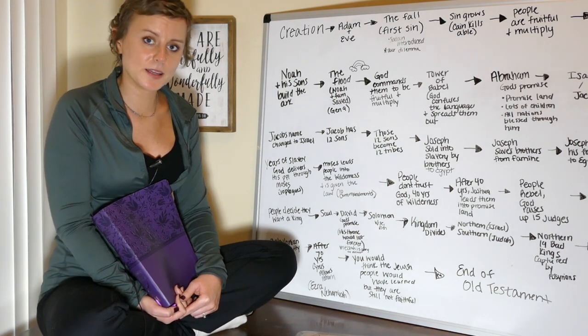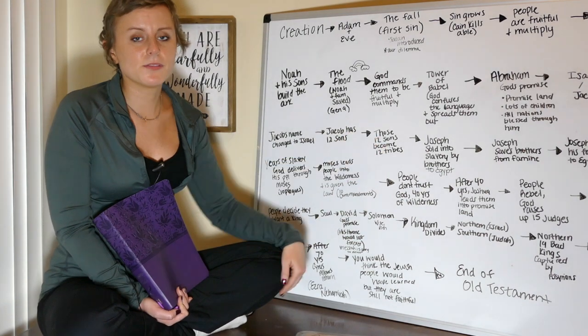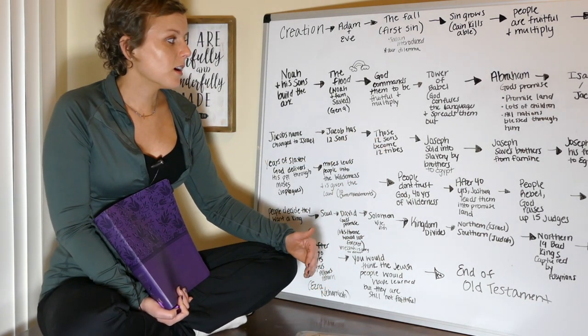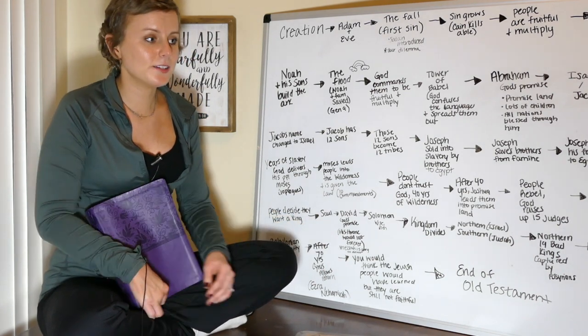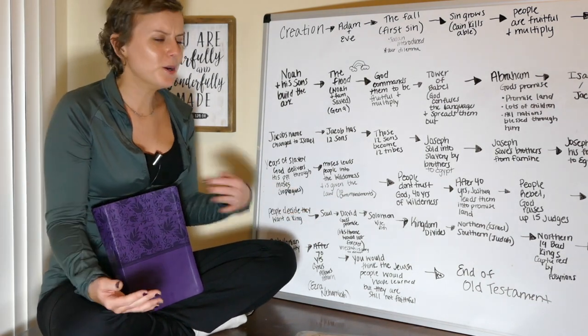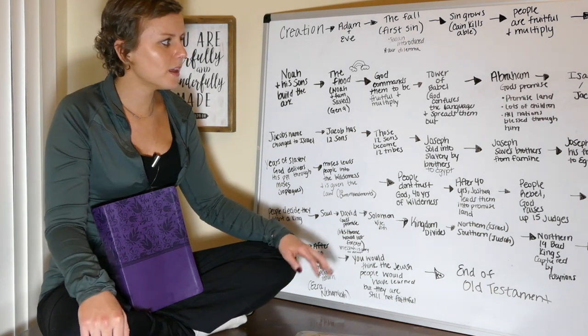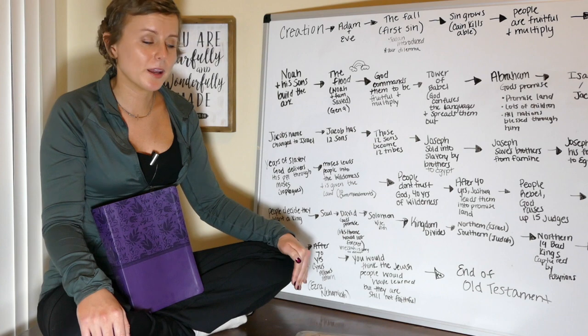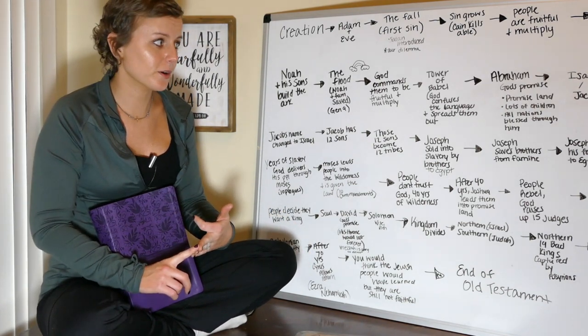So then God then commands Noah to be fruitful and multiply. And of course the people become evil again, and they decide that they're going to build a tower up to heaven to God. God doesn't like this, and so he confuses their languages, and then he disperses them in the lands. And so this is where all of our different languages come from, which I just think that's so interesting to read about the history of our languages. And then later, we're introduced to Abraham. God makes a promise to Abraham. He says he's going to give him a promised land, lots of children, and all nations are going to be blessed through him.